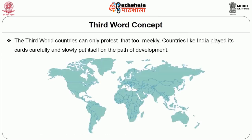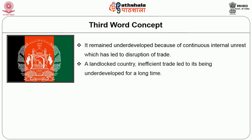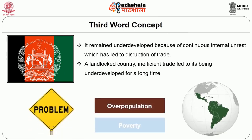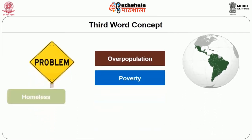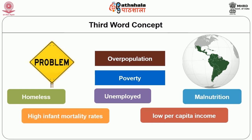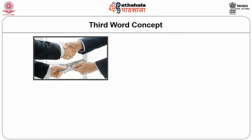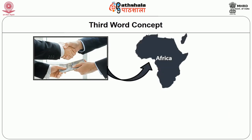It is the industrialized countries that are the main buyers and they alone decide prices; the terms of trade are decided by the big powers. Third world countries can only protest meekly. Countries like India played its cards carefully and slowly put itself on the path of development. Countries like Iraq, Algeria, Kuwait, Saudi Arabia, Nigeria and Oman have risen only because of oil exports. Afghanistan remained underdeveloped because of continuous internal unrest and being a landlocked country with inefficient trade. Countries in Latin America are infested with overpopulation and poverty; people are homeless and unemployed, with high infant mortality rates and low per capita income. Many countries in Africa are underdeveloped because of resources not being properly managed, and corruption is said to be the biggest factor keeping Africa underdeveloped despite immense resources.